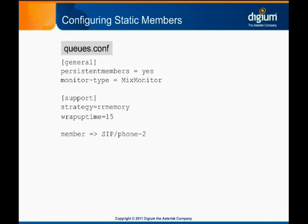The member name is what Asterisk will try to ring when there's a call queued. It should be an actual device or endpoint, such as a SIP or analog phone, that someone can answer.